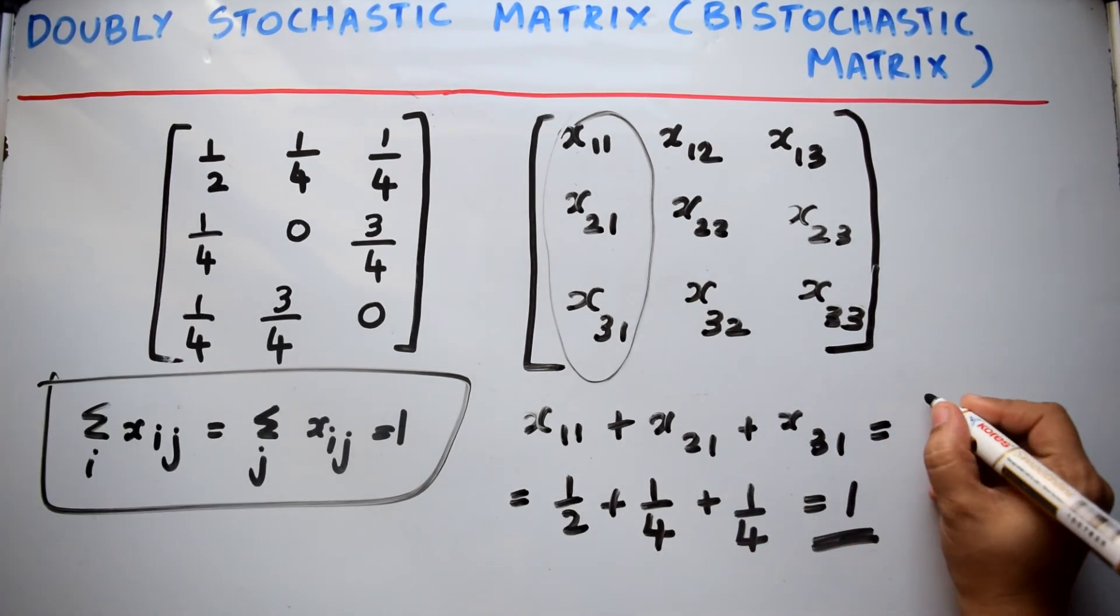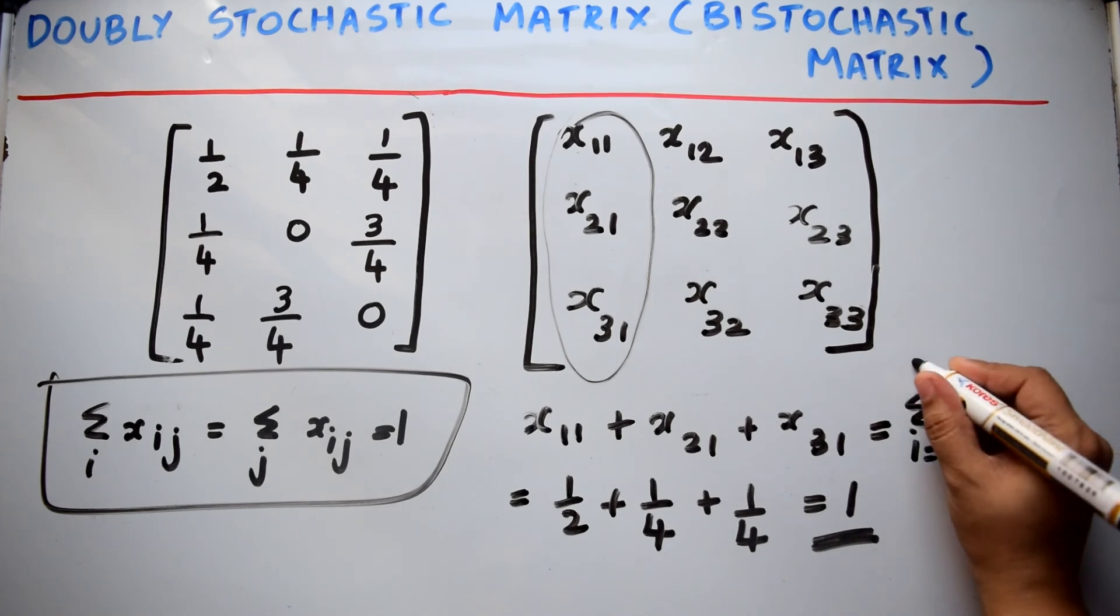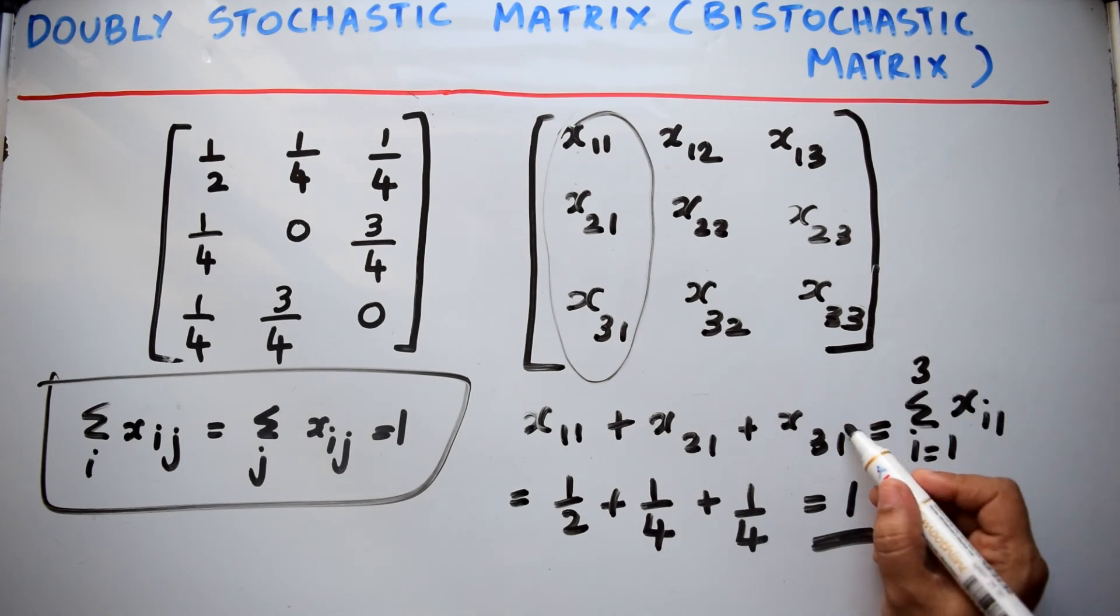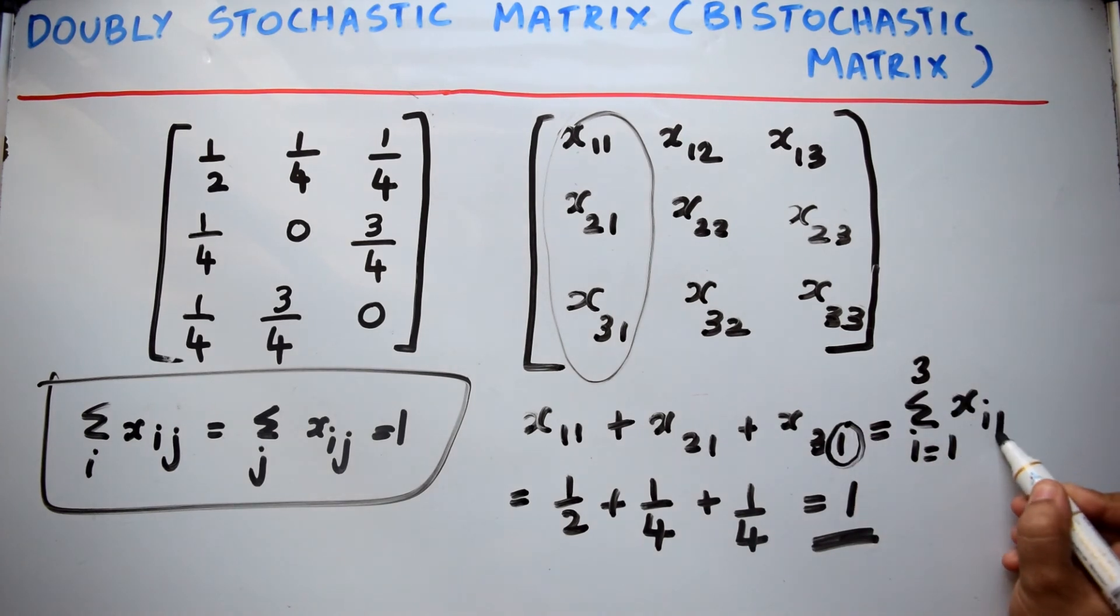This can be written as Σ(i=1 to 3) xi1, because i is varying from 1 to 3 and j remains constant at 1.